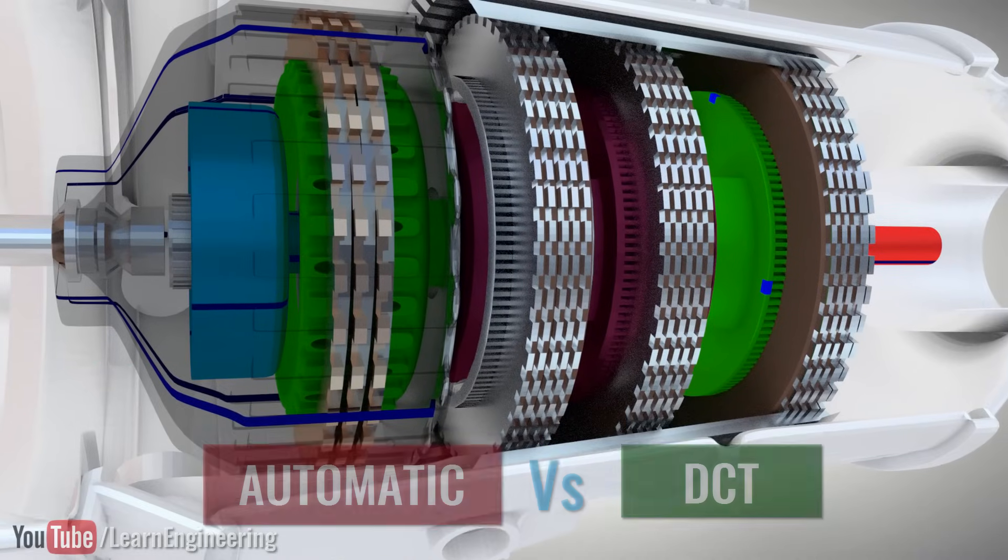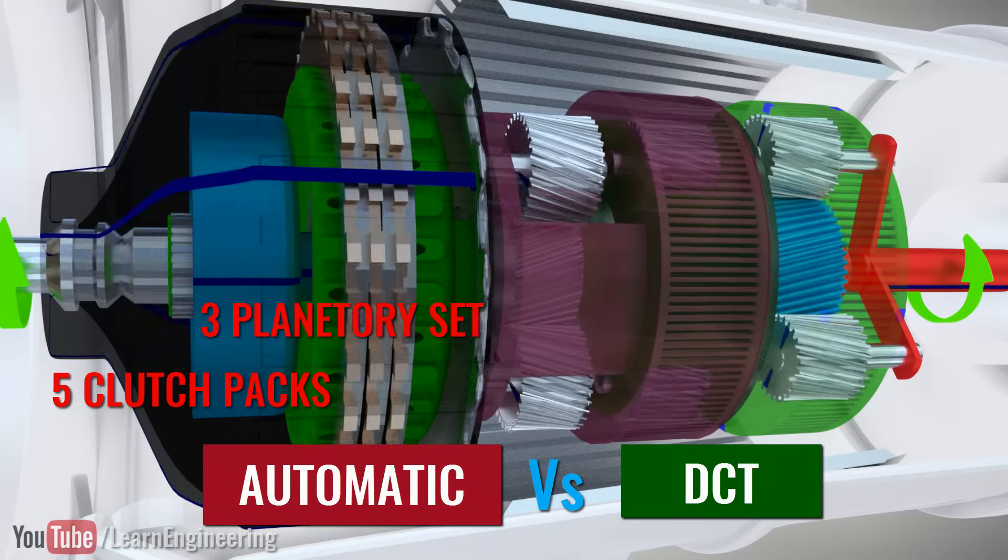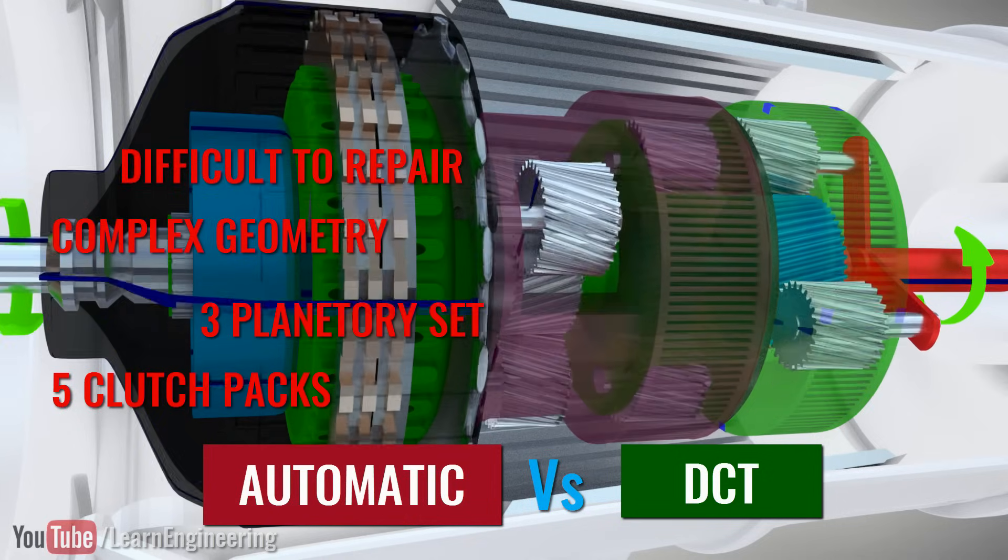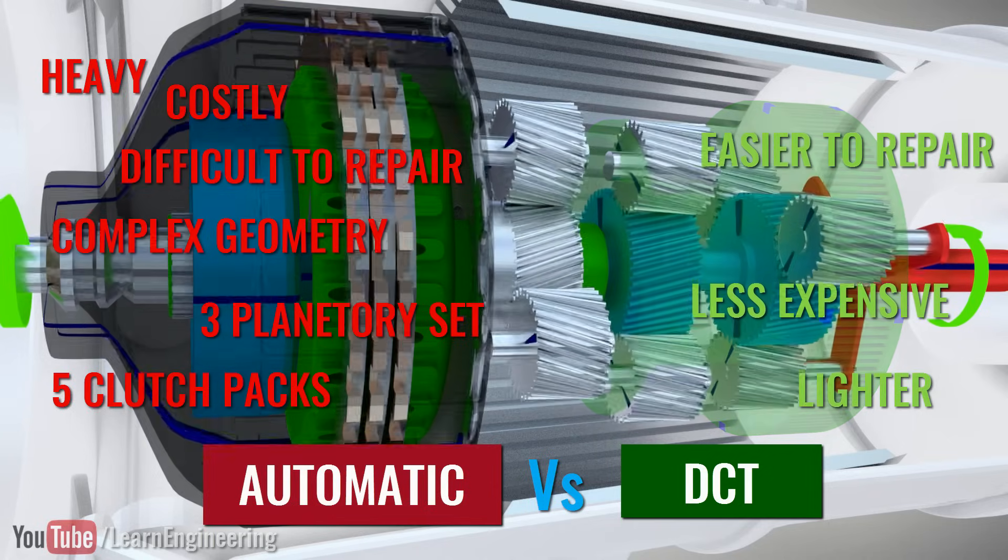Before wrapping up the video, let's have a look at a standard six-speed automatic transmission. It is clear that the DCT has fewer components and is therefore lighter and less expensive.